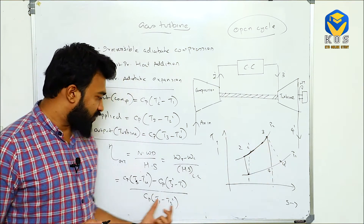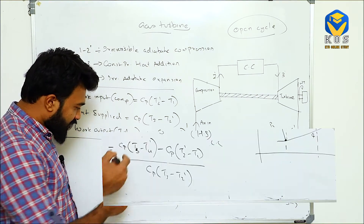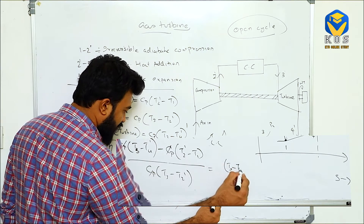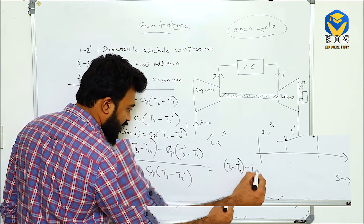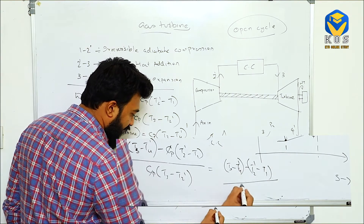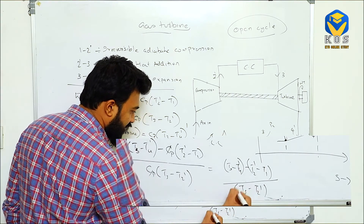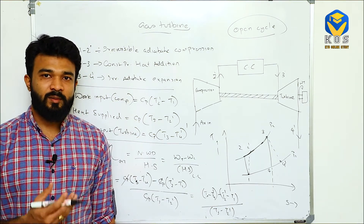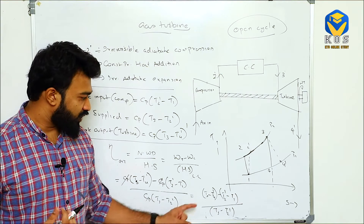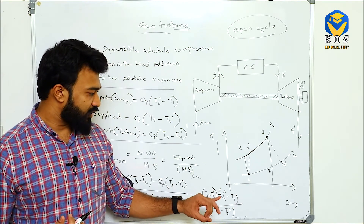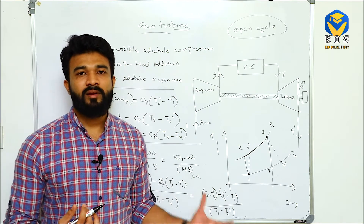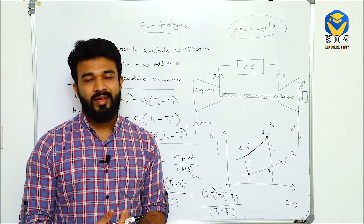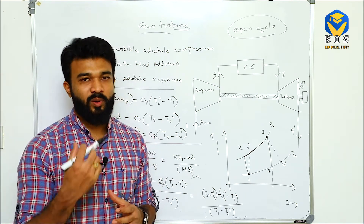Since Cp can be cancelled from all terms, the efficiency of the gas turbine becomes: (T3 - T4') minus (T2' - T1), all divided by (T3 - T2'). To calculate the efficiency of any gas turbine, we only need four temperatures: T1, T2', T3, and T4'. With these four temperatures we can easily calculate the efficiency.